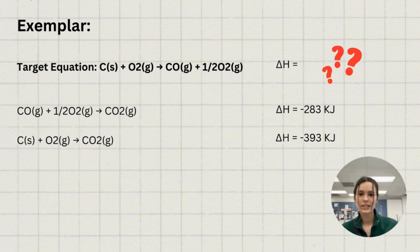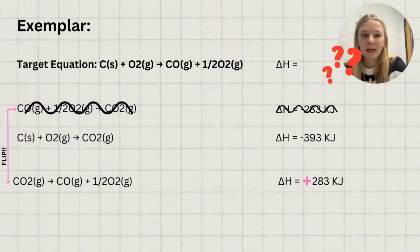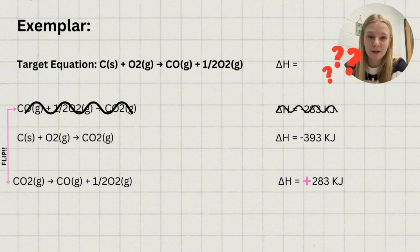The first step to solve for our delta H value of the target equation is to rearrange the given equations so that the products and reactants align with our target equation. In the first given equation, you can see that carbon monoxide is on the reactant side. To fix this, we're going to flip the given equation. By doing this, you must also flip the sign of the given enthalpy change. As Hess's law states that the changes we make to an equation, we must also make to the delta H value.